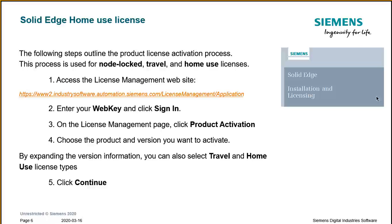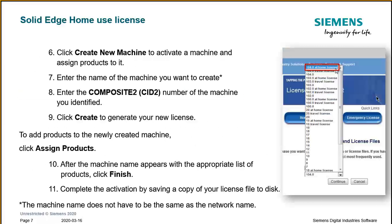On the license management page, you click Product Activation and choose the product and version you want to activate, as you might have different options. By expanding the version information, you can select which type of license you want — in this case, you would select the home use license type, then click Continue. The system gives you the option to create a new machine, assign that product to this machine, enter a name for the machine (it doesn't have to match the network name), and enter the Composite CID number for that machine. Then click Create to generate your new license.